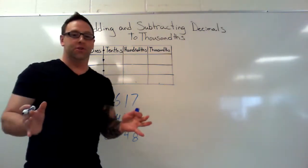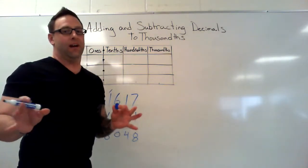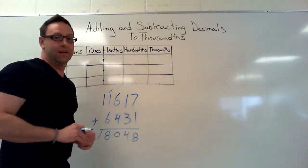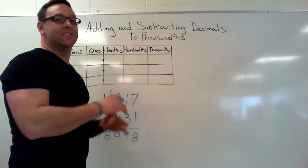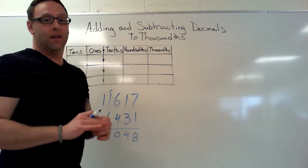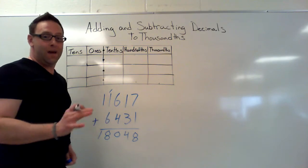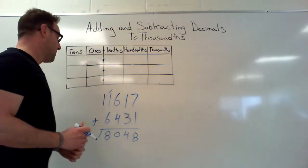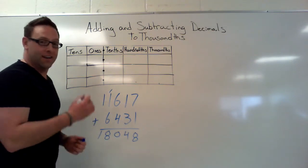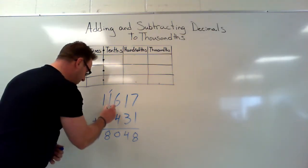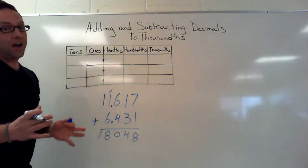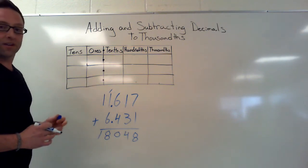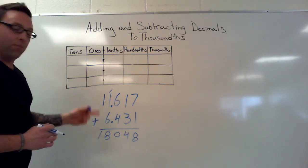Our answer is eighteen thousand and forty-eight. I know what you're thinking, Mr. Lukey — we know how to add. Yes, I know you know how to add, so what we're going to do next is going to be super easy. Let's take a look at what would happen to adding if we put a decimal in. I'm going to take these two numbers and add decimals — now I've got eleven point six one seven plus six point four three one.